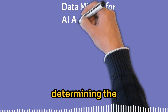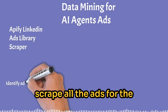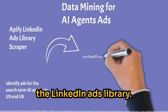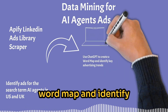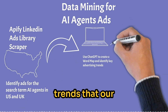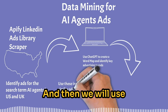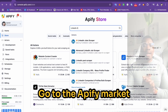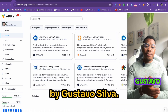Here are the steps. We will start by determining the geographies of the United States and the UK, scrape all the ads for the search term AI agents in the LinkedIn Ads Library, insert the data into ChatGPT to create a word map and identify key advertising trends that our competitors are doing, and then use these insights to create similar ads and an alternative campaign.